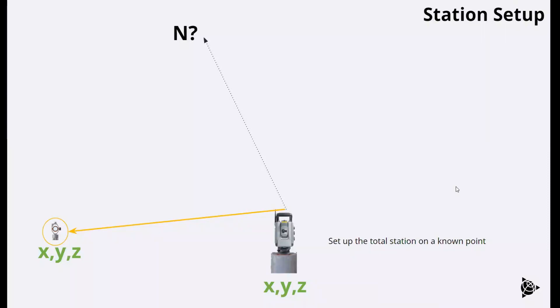And then we also need to know the location of one more target or one more what we call a back site to really give the total station its orientation. Once we know where the total station is and where it's aiming, then we can use that information and calculate the position of whatever we need to calculate.